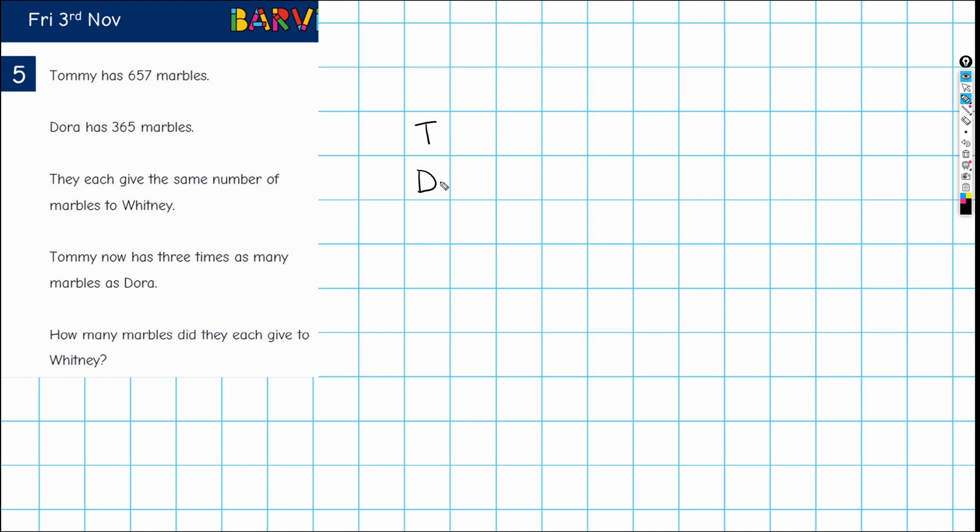So I've got Tommy and Dora, and where I'm actually going to start is here because it says Tommy now has three times as many marbles as Dora. So I am going to draw, that's going to be my basic block. In fact, Dora's got the basic block and Tommy has three times as many. So one, two, and three. That represents what we see here.